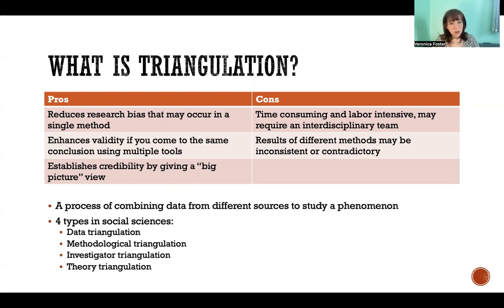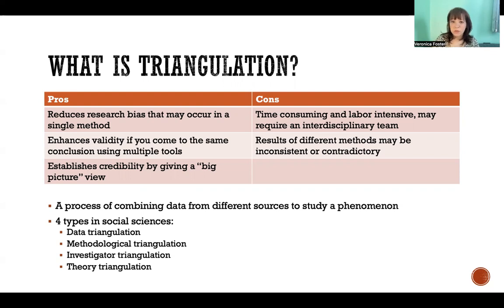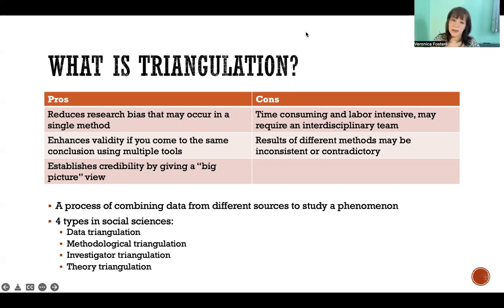Also, the results of different methods could potentially be inconsistent with one another — they could contradict one another — and then you're in a situation of trying to figure out how to interpret that research. I would argue that if that happens, it's a good thing you triangulated so that you found that conflict, as opposed to only using one of those methods and not knowing there might've been some contradiction. So although that is a con, it's kind of a good thing if you think about it that way.